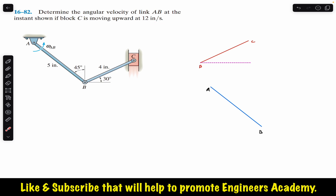Let's define our coordinate system: towards the right is the positive x direction and in the upward direction is our positive y. We are going to solve this problem by finding the instantaneous center. For that, the first step is to find the direction of the velocities of points B and C.